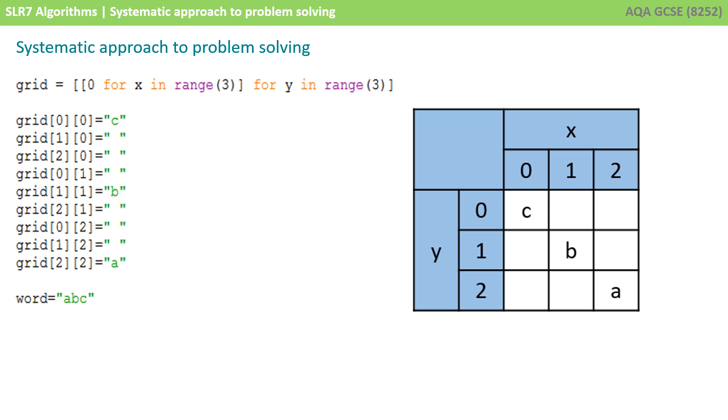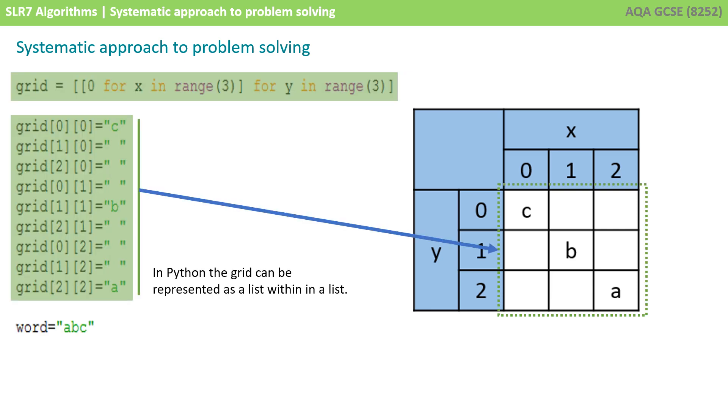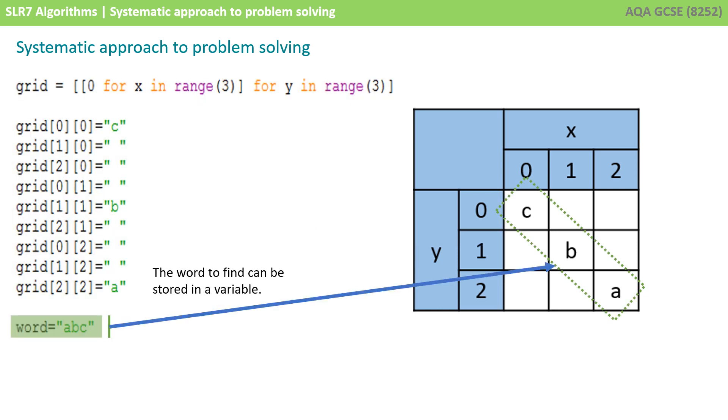Now, taking a problem decomposition and algorithmic thinking approach, we can think about how to store our data using the data structures provided by our programming language. Here we're showing a Python example. Now, Python supports lists and we can have lists inside lists and then we can refer to a particular item in the list using its number. So, it's a good fit for our problem. We can also store the word that we're going to be looking for in a variable.